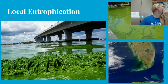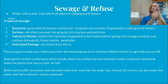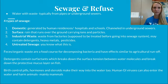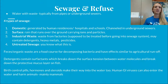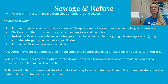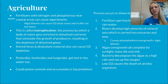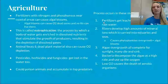Sewage is water with waste, typically from pipes and underground sewers. There are four types: domestic sewage from residences, hospitals, and schools going to underground sewers; surface runoff from rain picking up particles; industrial waste from factories containing detergents, heavy metals, and pesticides; and untreated sewage — raw fecal material. Fecal matter and organic waste are food sources for decomposing bacteria and have effects similar to agricultural runoff — the eutrophication process, but with sewage and fecal material instead of fertilizers.